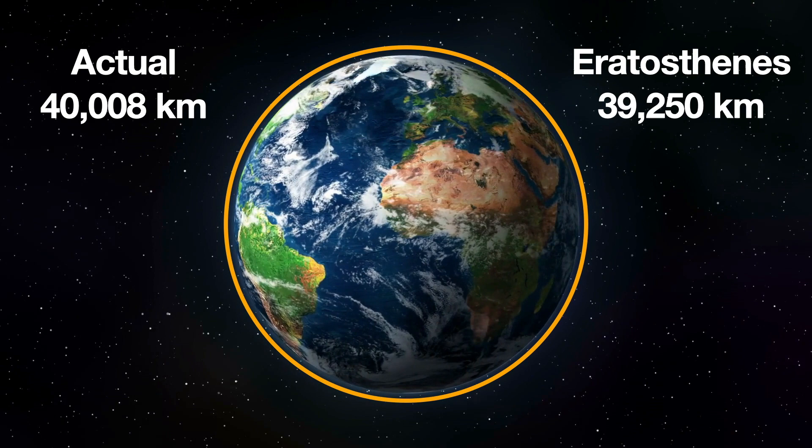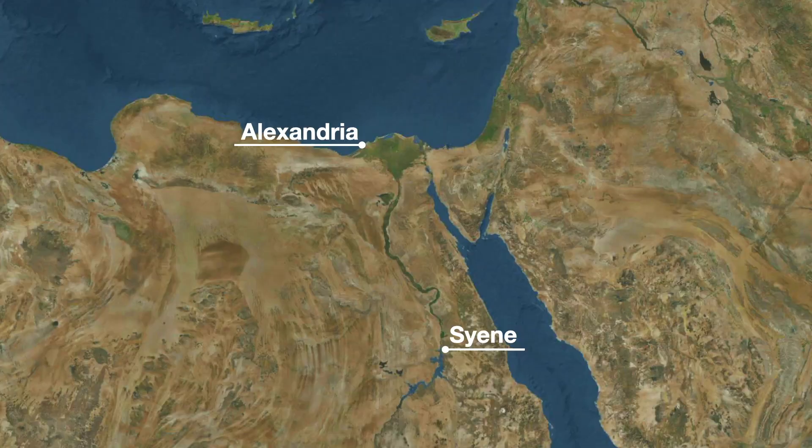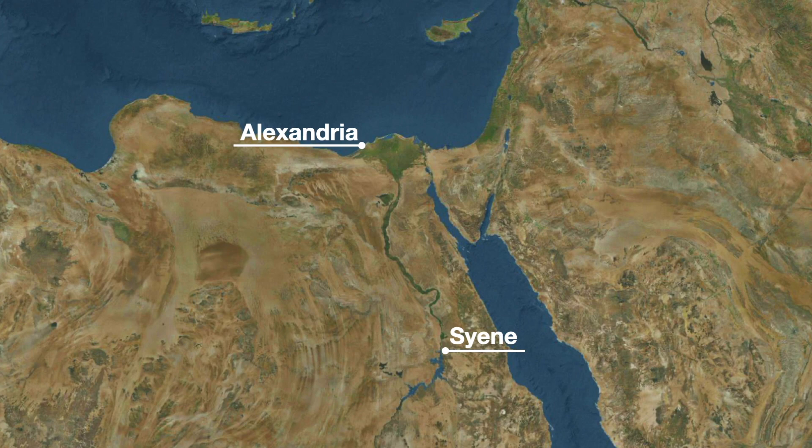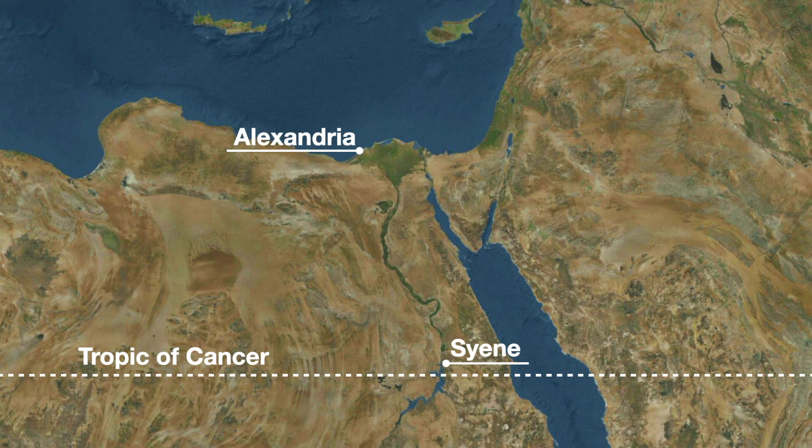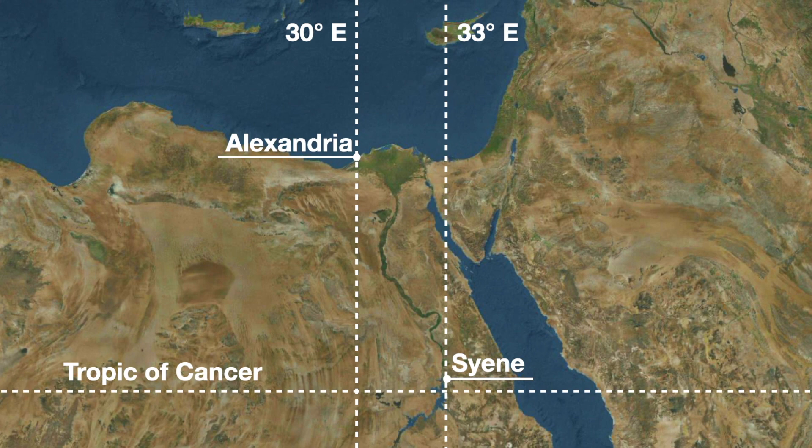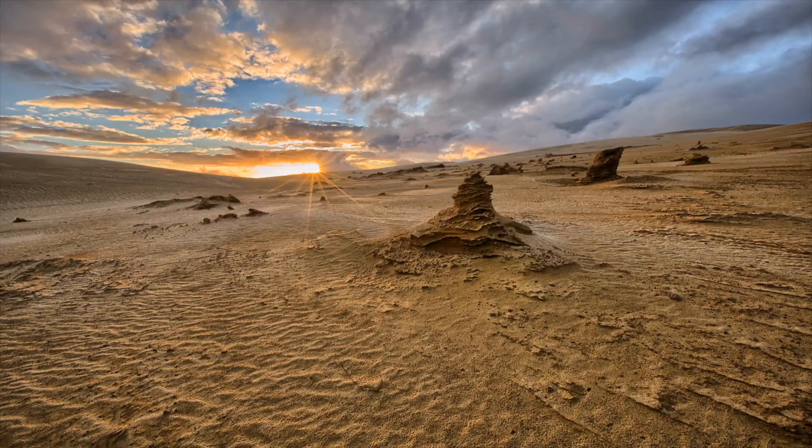With Cleomedes' retelling of the calculation though, there are some issues. First, Syene is not on the tropic of cancer where the sun is directly overhead at noon on the June solstice. Second, Alexandria is not directly north of Syene as they are located on different meridians or lines of longitude.